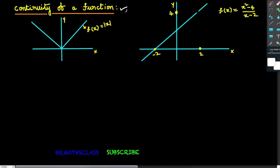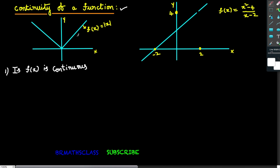In this class I'll discuss general things about continuity. Observe the first function — the modulus function. Is f(x) continuous? Look at the graph of the modulus function: is there any gap in its graph? No, there is no gap. So we can say f(x) is a continuous function. In general terms: if you can draw the graph without lifting the pen, or if there is no gap in its graph, then the function is continuous.